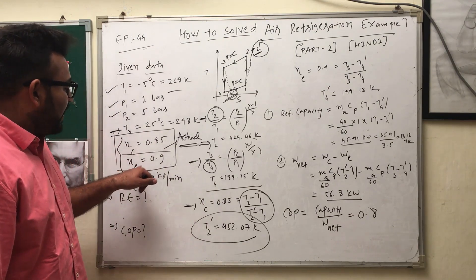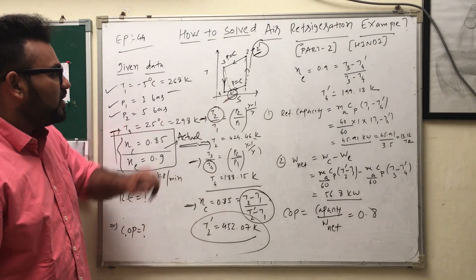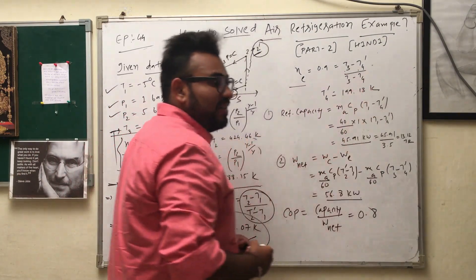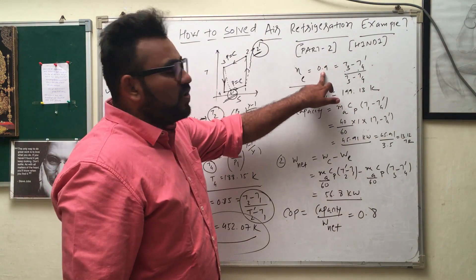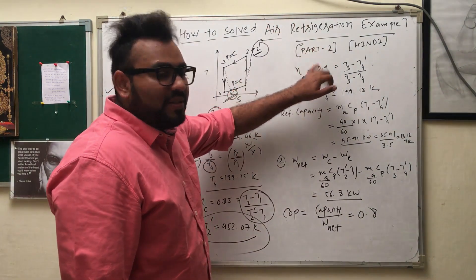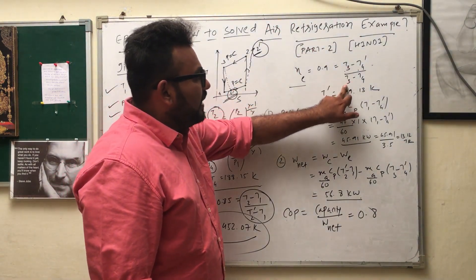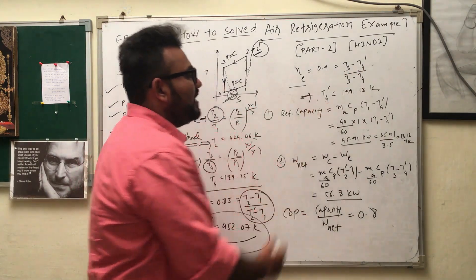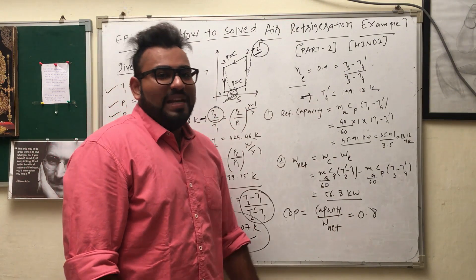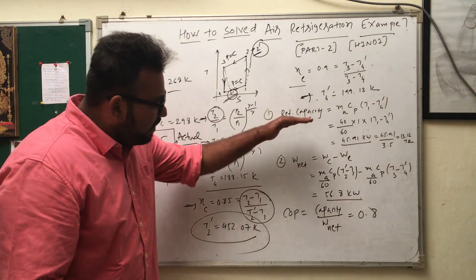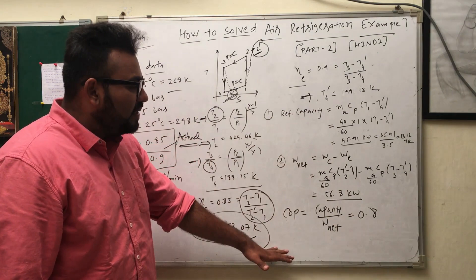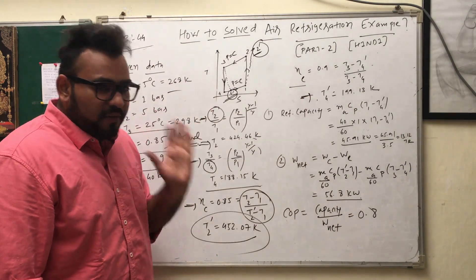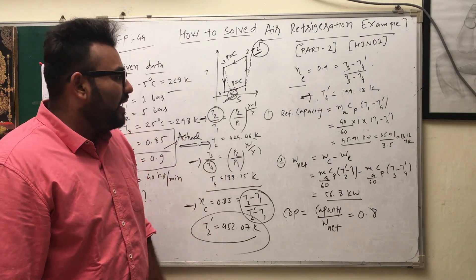Similarly, use the expander efficiency to find T4-dash. The expander efficiency formula is: η_expander = (T3 − T4_dash) / (T3 − T4). The expander efficiency is 0.9 (90%). With T3 and T4 known, you can calculate T4-dash — the actual temperature after expansion.